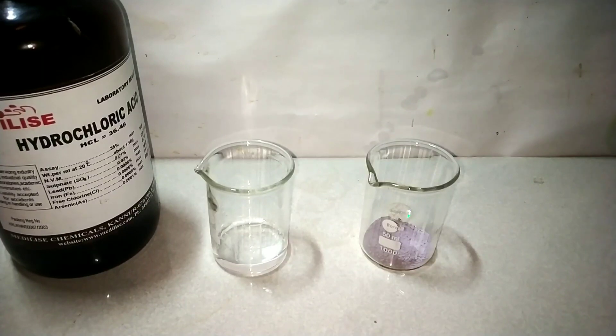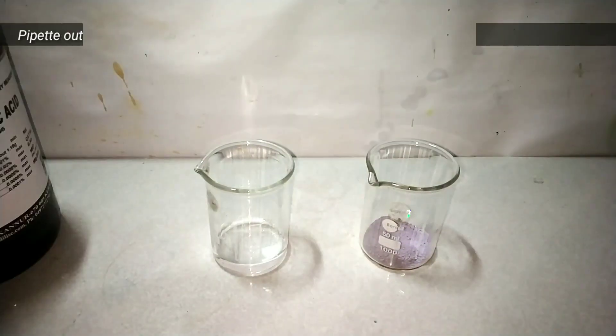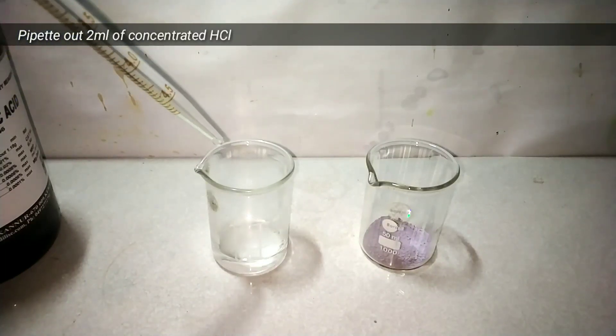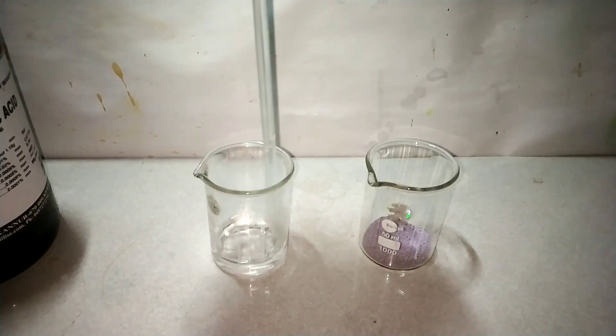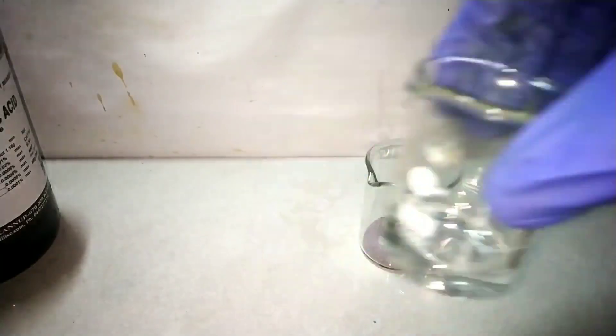That is for making a dilute solution of hydrochloric acid. With the help of a pipette, 2 milliliters of concentrated hydrochloric acid was pipetted out and added into the 10 milliliter water. Mix it well with the help of a glass stirrer and now we have a dilute solution of hydrochloric acid.